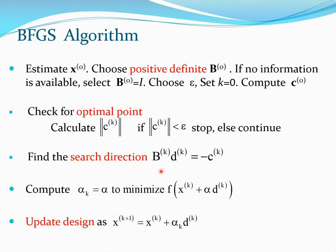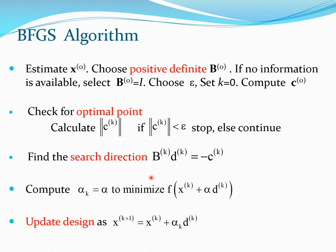If you start with B0 equal to I, you are essentially starting with the steepest descent direction and then progressively building up the B matrix — switching from the steepest descent direction to the Newton direction. This relates to the Marquardt method: far away from the optimal point steepest descent is fine, and as you approach the minimum Bk should tend toward Hk.